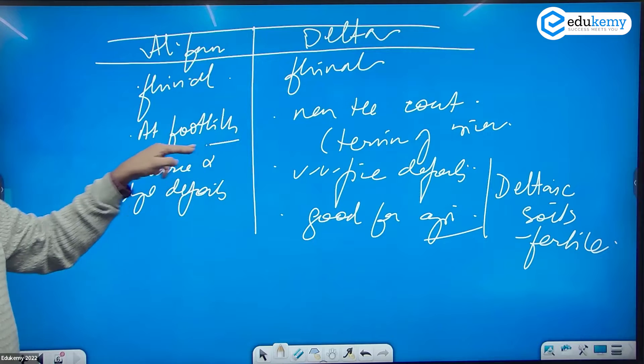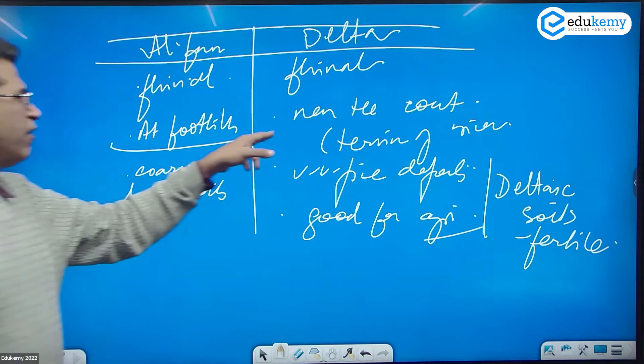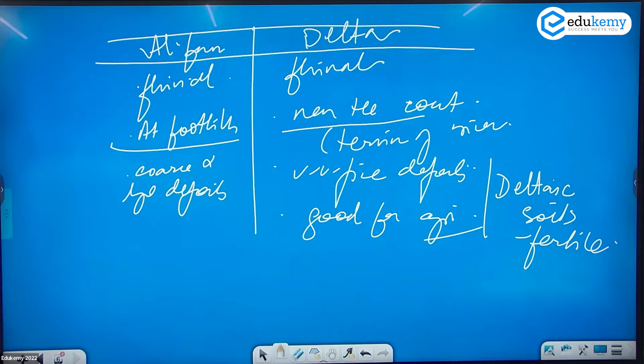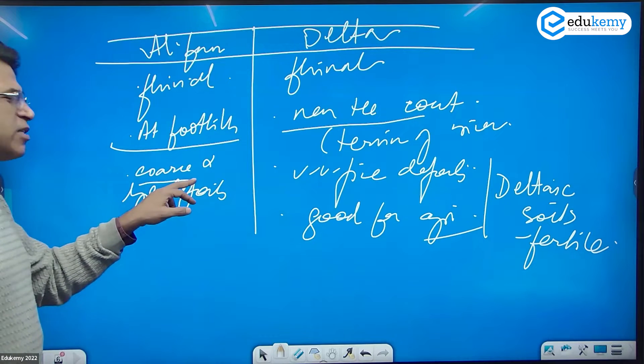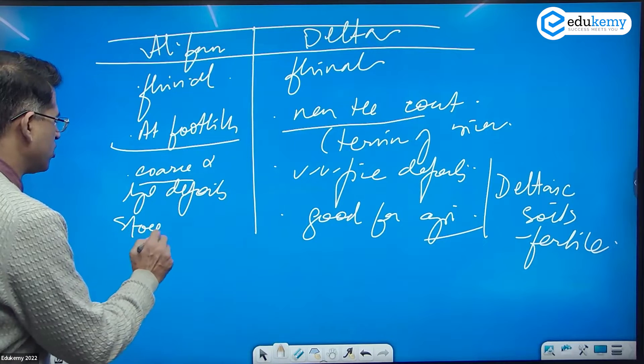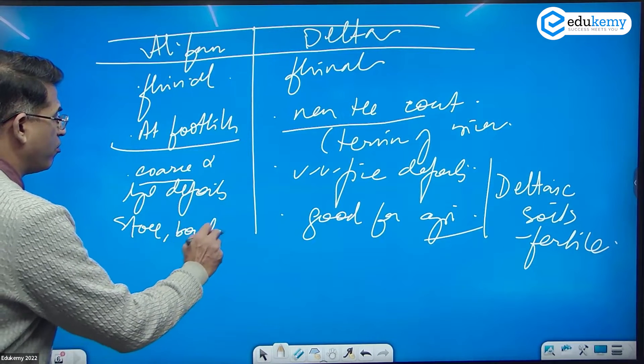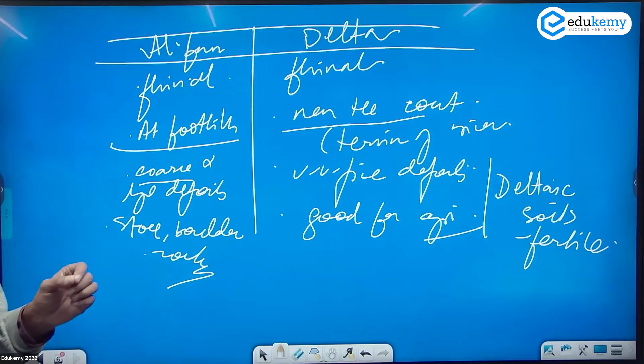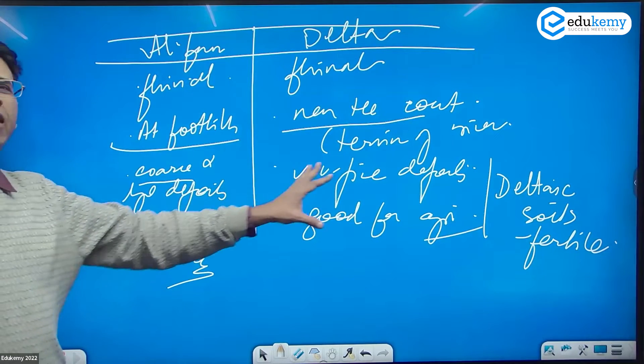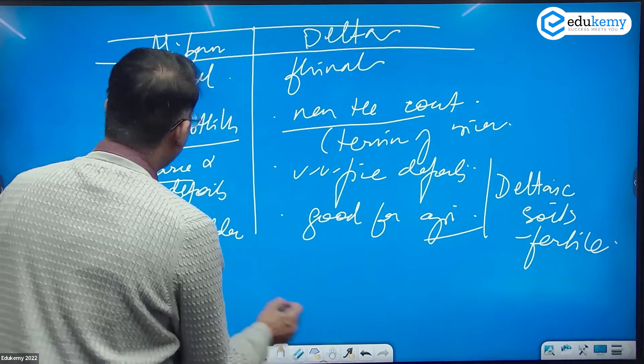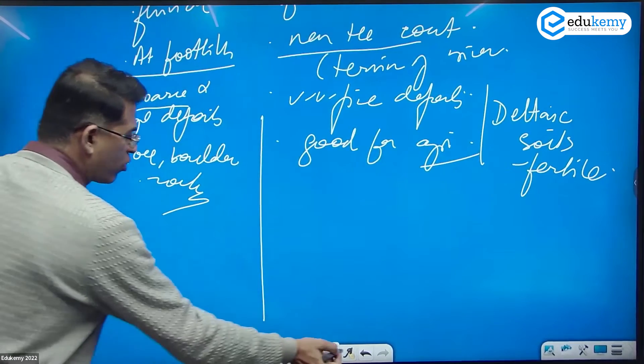Both are fluvial. This is formed at the foothills, near the coast where the river ends at its terminus. These have coarse deposits, large deposits with stones, boulders, and rocks. Whereas there you'll have fine deposits good for agriculture. Alluvial cones are not good for agriculture.